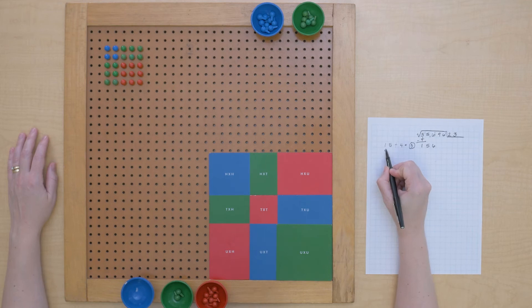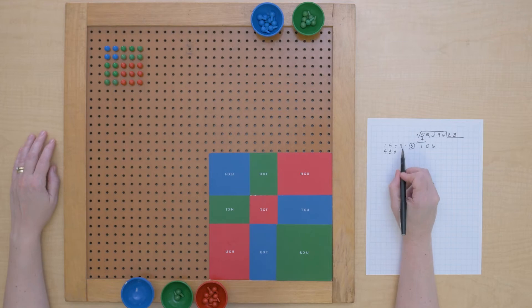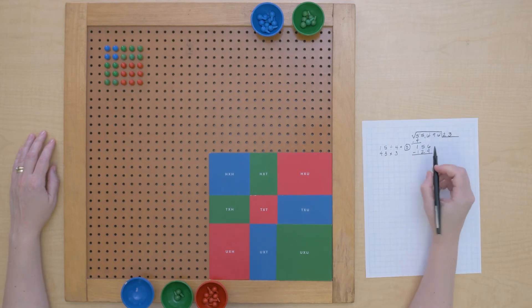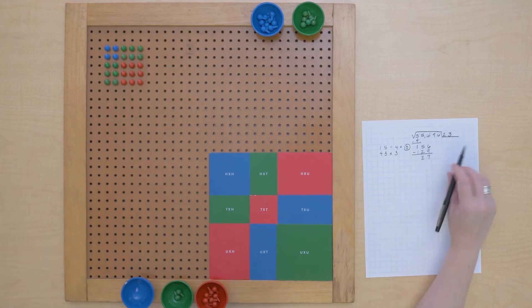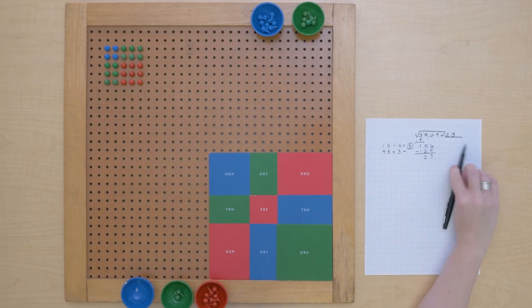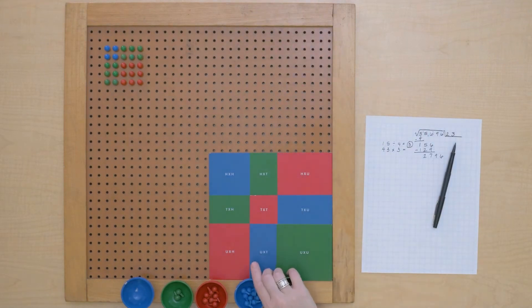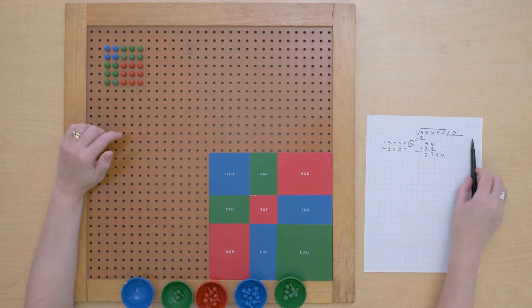And then multiply that by the trial root, and that gives us 129 which should be what we used, and that means we should have 27 left which we do. Now we'll bring down the next period, we have 2,796.